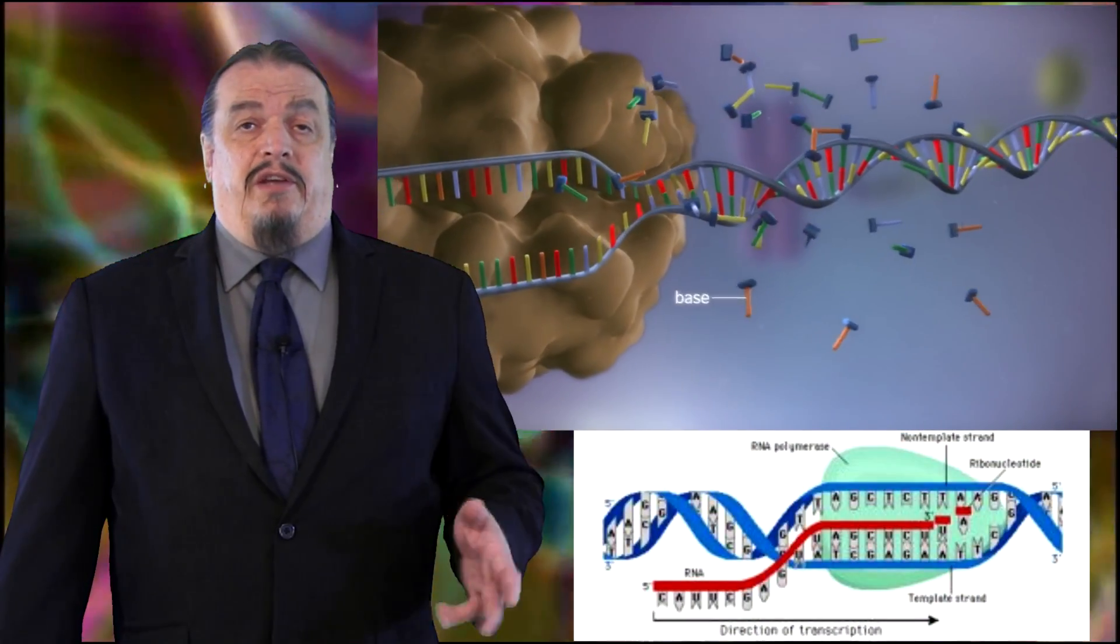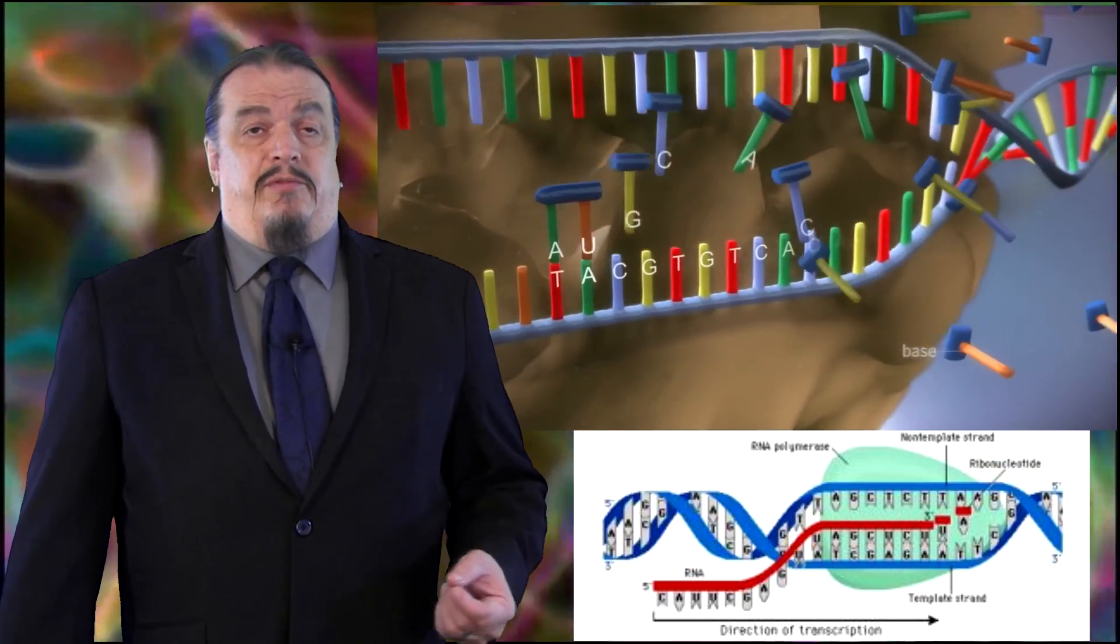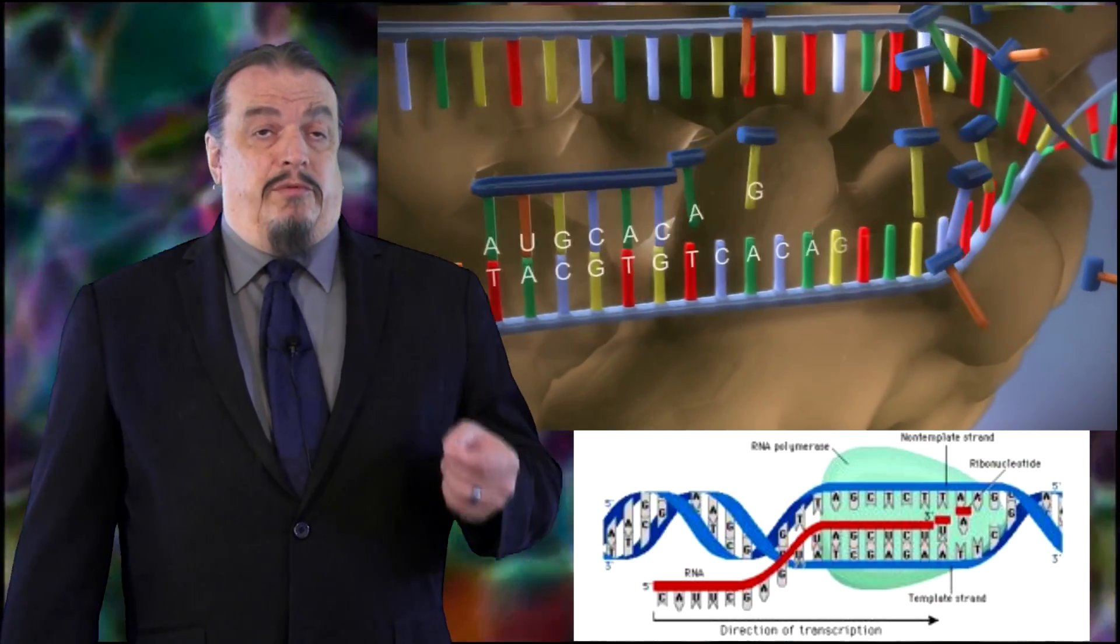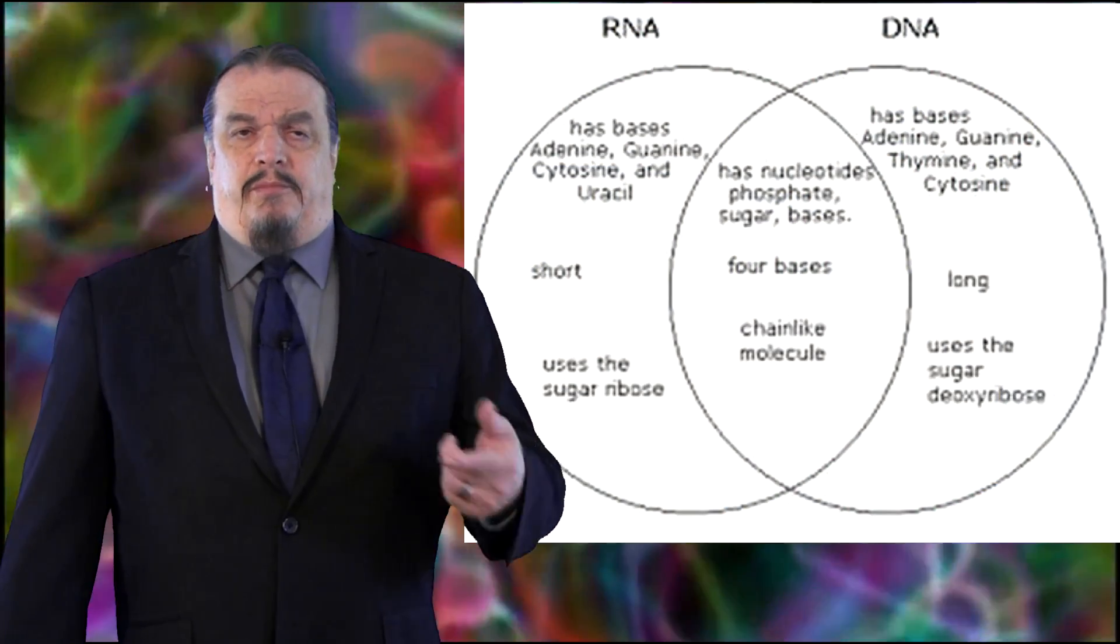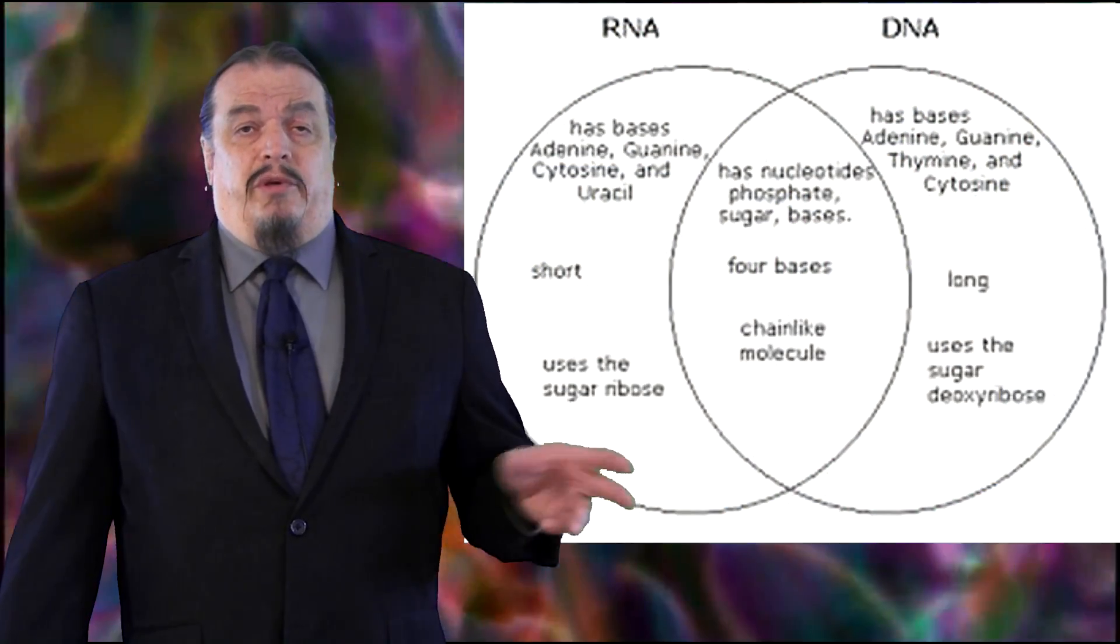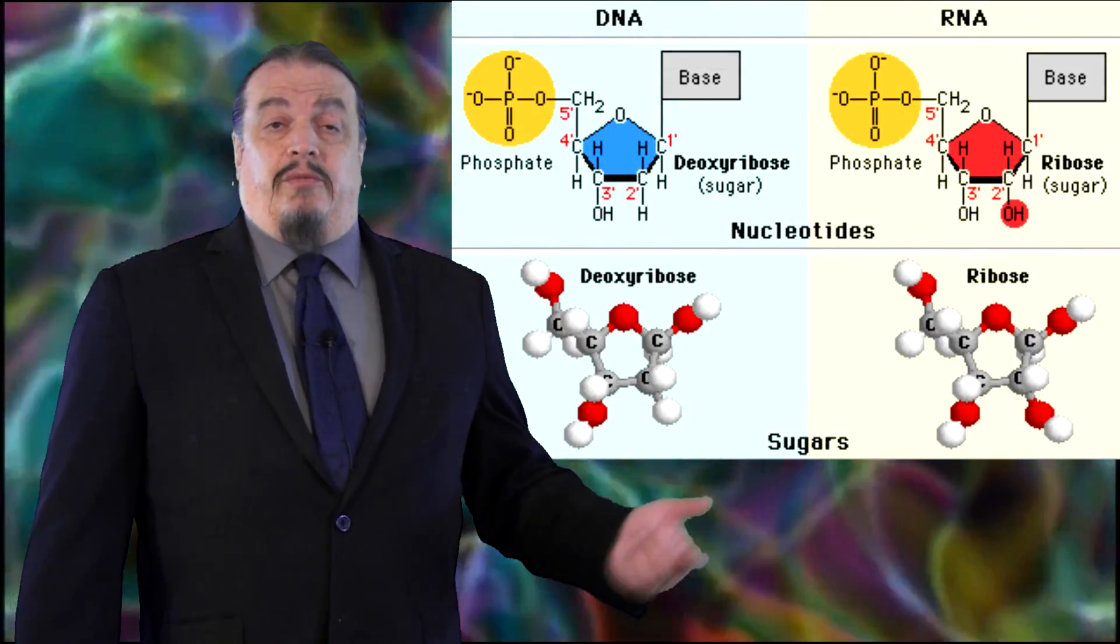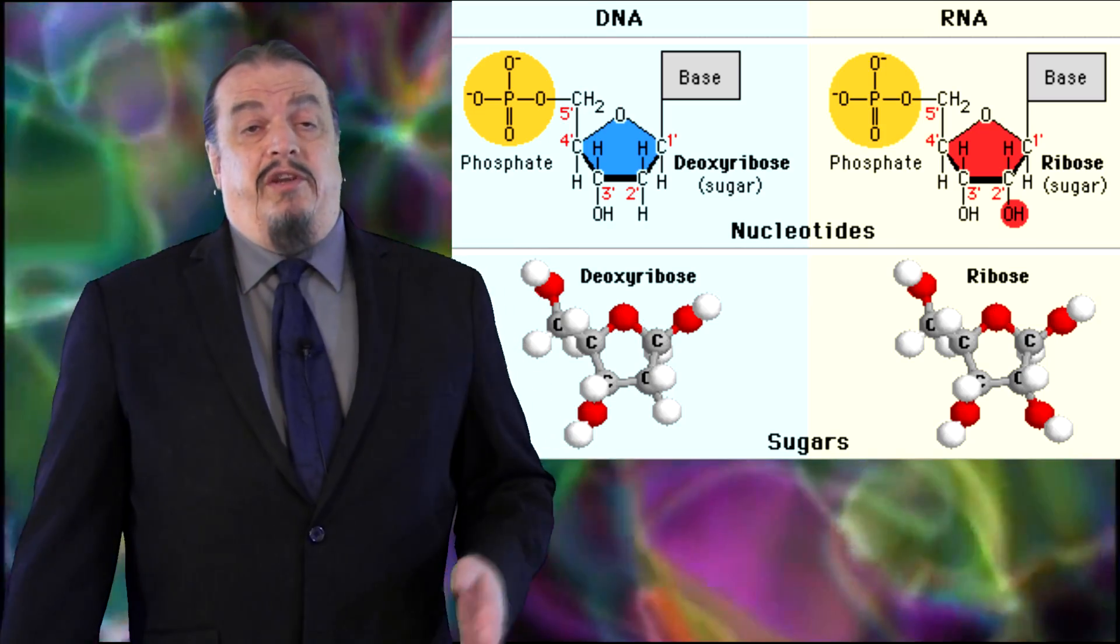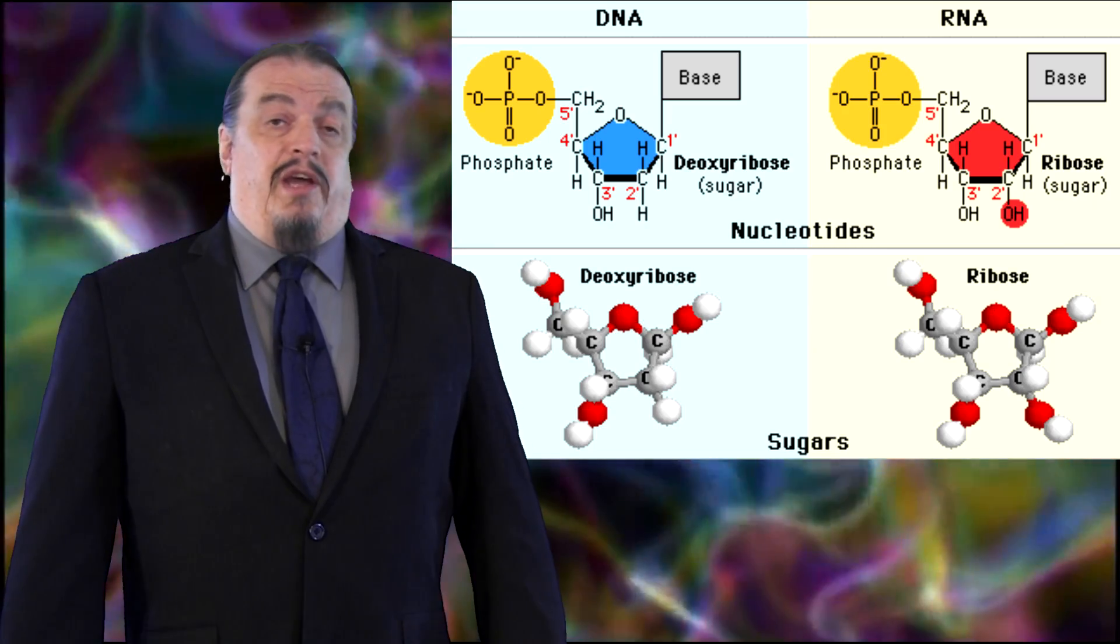Unlike replication, your DNA is not duplicating into another DNA. In the process called transcription, double-stranded DNA is copied into a single strand of RNA or ribonucleic acid. The names of both RNA and DNA point to another key difference between them, and that is that they use different sugars, ribose and deoxyribose. And the only difference between those sugars is that deoxyribose is missing one oxygen atom that ribose has.